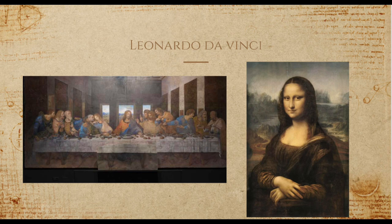He also used sfumato — Italian for 'smoke' — the blurring of contours and edges. This changed the sharp and strict contours of previous art, making them blend. It was a way for artists to paint things as they appear to the human eye. Leonardo changed paintings in a way that made them seem real with new techniques such as blending and shading to create a more lifelike appearance.